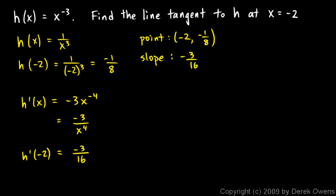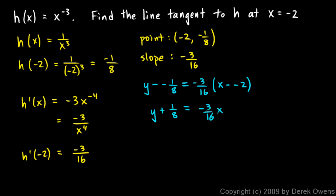We have a point and a slope, so we can use the point-slope form of an equation for a line. y minus y1, so that's y minus negative 1 eighth, is equal to the slope, negative 3 sixteenths, times x minus x1, and x1 is negative 2. On the left side, this becomes y plus 1 eighth. Distributing on the right gives negative 3 sixteenths x, and the negatives together give negative 3 eighths. Subtracting 1 eighth from each side gives y equals negative 3 sixteenths x minus 1 half.